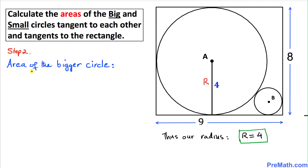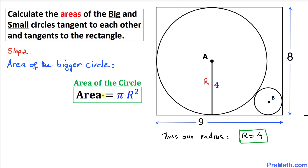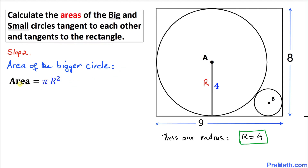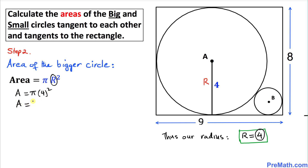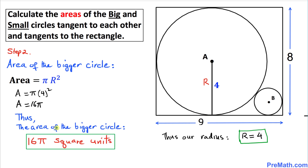Now we are going to calculate the area of this bigger circle whose radius is four units. Using the area formula — area equals pi r squared — in our case r is four, so area equals pi times four squared, which gives us 16 pi. The area of the bigger circle is 16 pi square units.